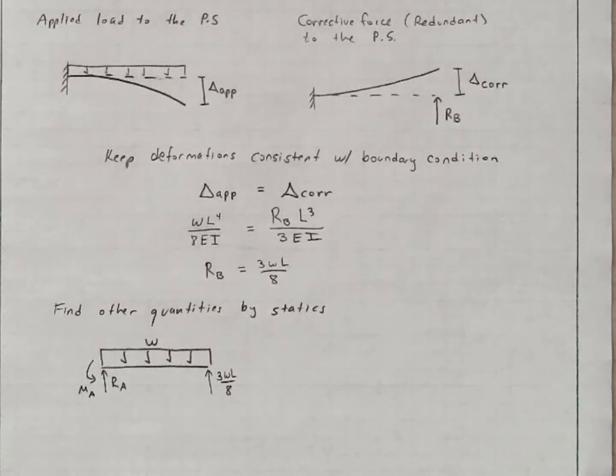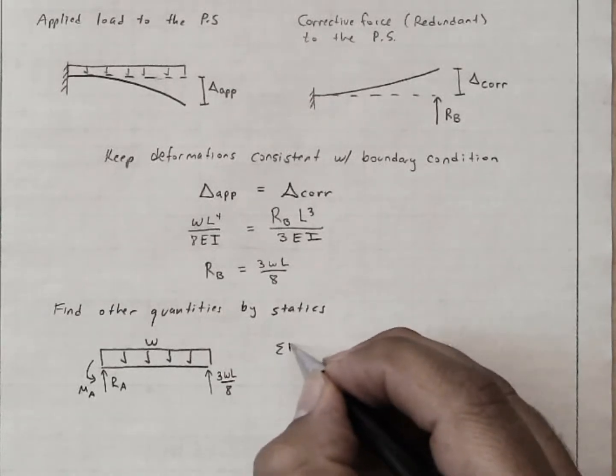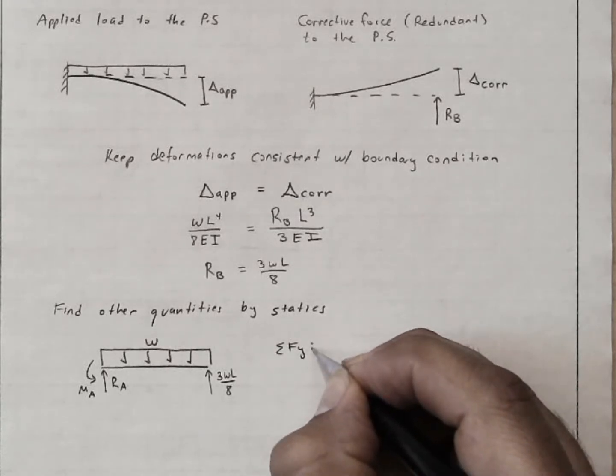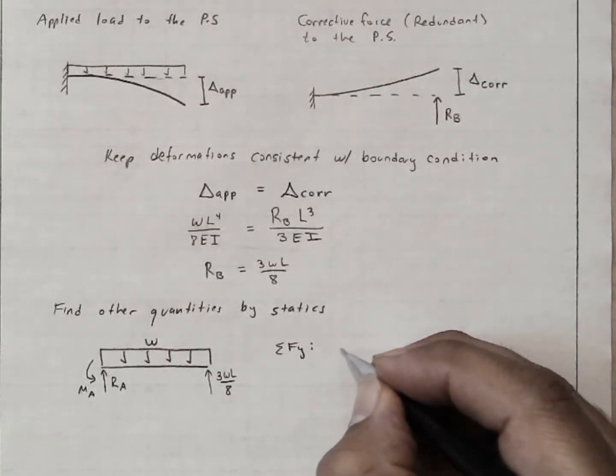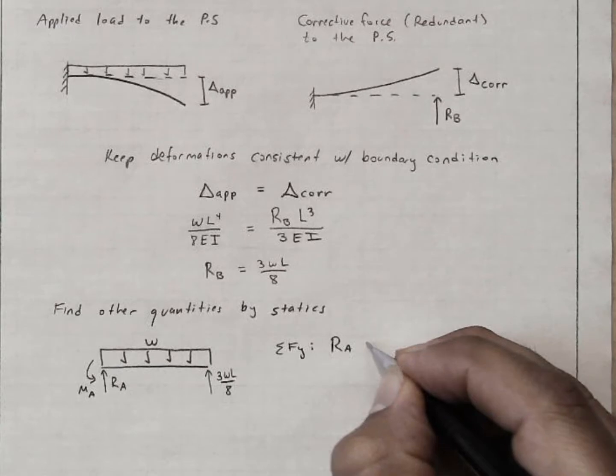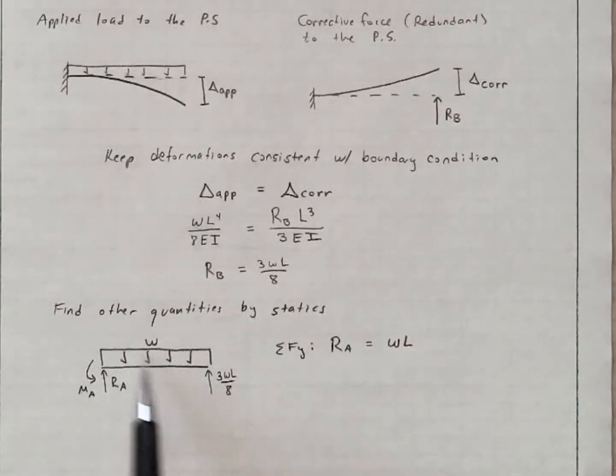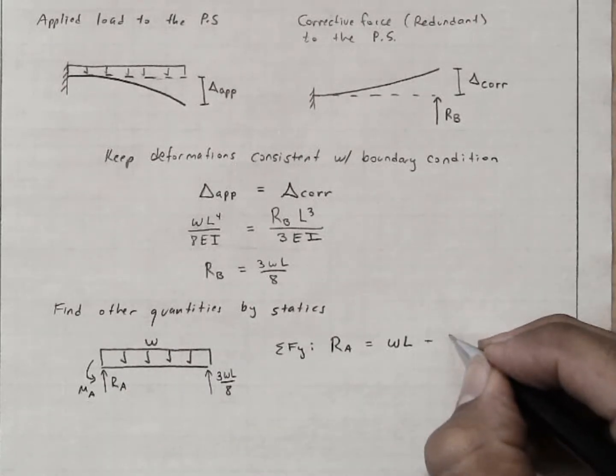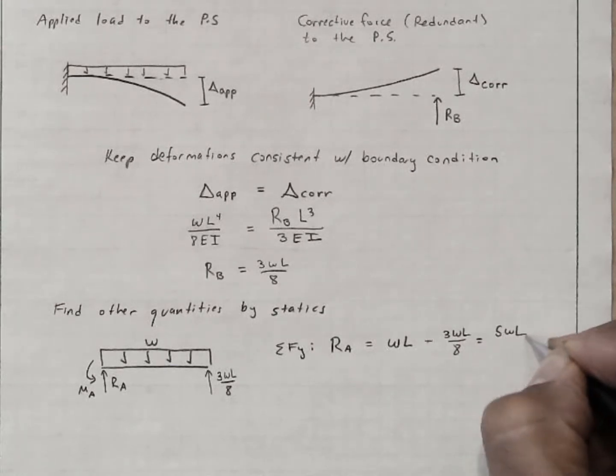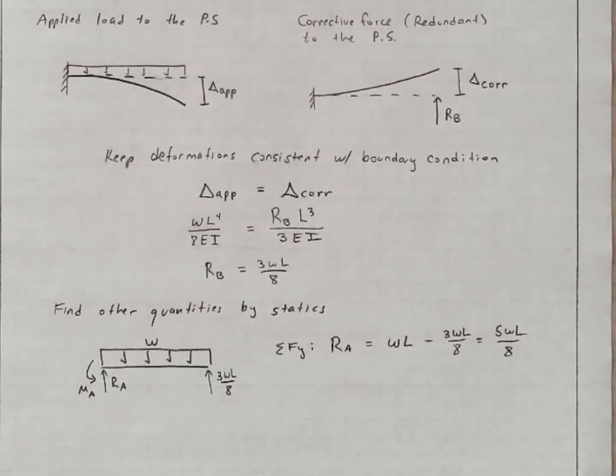But I still need to find the moment at the end and the vertical reaction. Well, this is a pretty straightforward problem from statics. I can sum forces in the vertical direction. And this will tell me that R sub A is equal to W times L, the total force from this distributed load, minus 3WL over 8. That's equal to 5WL over 8.